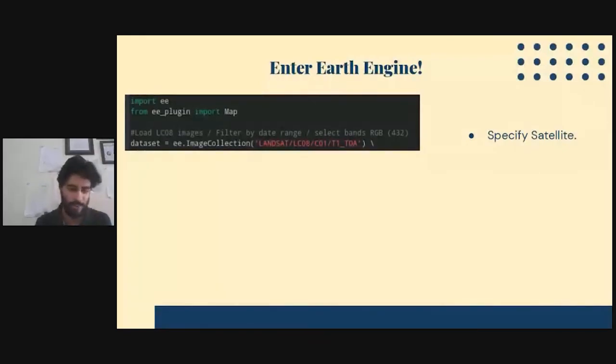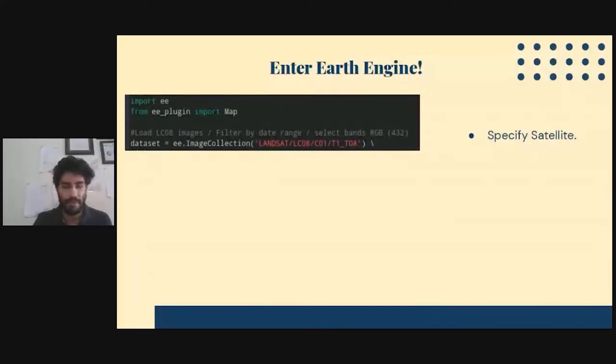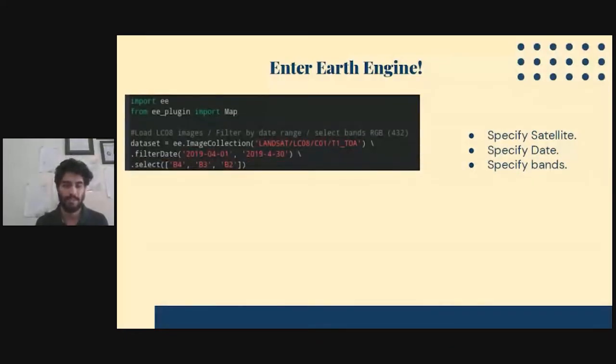When you're using Earth Engine, you just need to do four simple steps. And you get an image almost immediately. The first thing you need to do is specify what satellite you're looking for. In this case, we're looking for Landsat. And of course, you've just imported the Earth Engine API, and you do some function calls. Once you specify the satellite, you specify what dates you're looking at. You can put the ranges of the date, or you can put one specific date. Once you've done that, you can specify the bands.